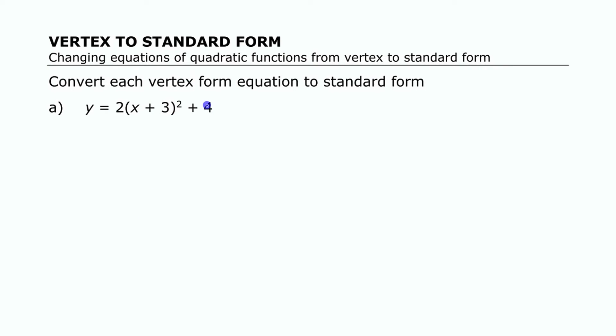Right now to convert a vertex form equation like that into standard form, we're going to use algebra skills that you're probably already familiar with. For starters we need to expand this whole expression. Now it's 2 times this binomial square. We need to expand this binomial first and then we can multiply it by the 2 out in front.